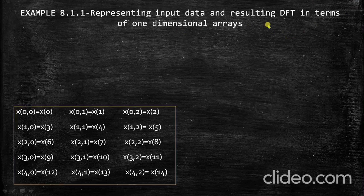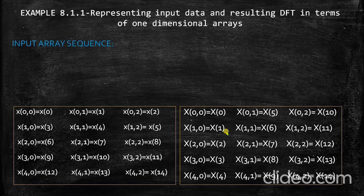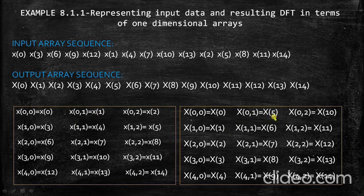Now let us look at representing the input data and resulting DFT as one-dimensional arrays. The two-dimensional form of the input signal is stored row-wise as X(0), X(1), X(2), and so on up to X(14). The resulting transformation signal capital X of K is stored column-wise: X(0), X(1), X(2), X(3), and so on. For example, X(0,0) in the input corresponds to small x(0), and capital X(0,0) corresponds to capital X(0). However, X(0,1) in the input is small x(1), whereas in the output it is capital X(5) — showing the difference between row-wise and column-wise storage.